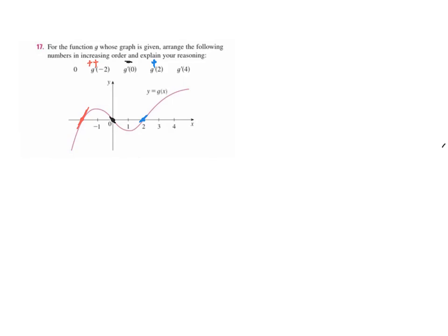And then when I look at g'(4) at 4, the slope of that tangent line is also positive, right? But it is less steep, so less positive than it was at 2. So this is even more positive and this is even more positive than that.